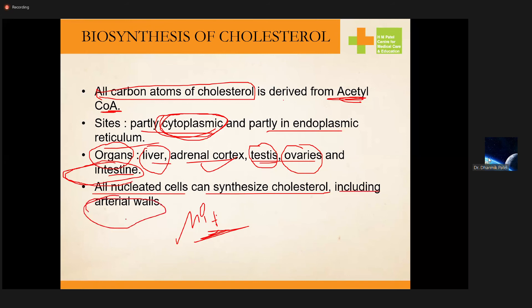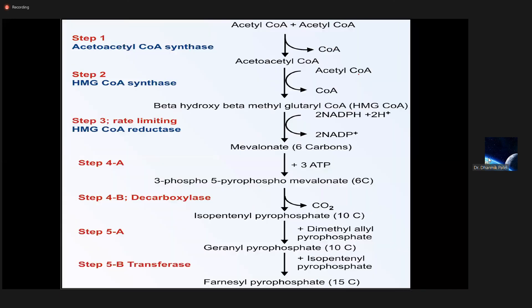All nucleated cells can synthesize cholesterol, including arterial cells — and this is actually not good, because they can synthesize cholesterol and then it can be collected in the arteries themselves.